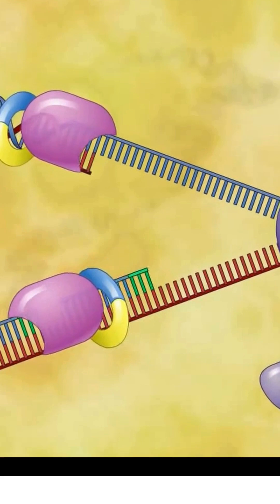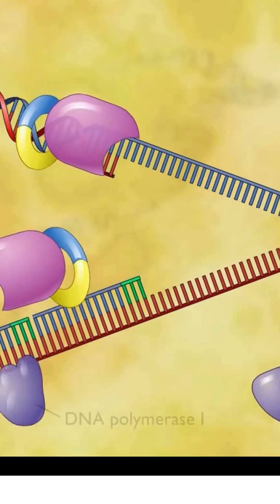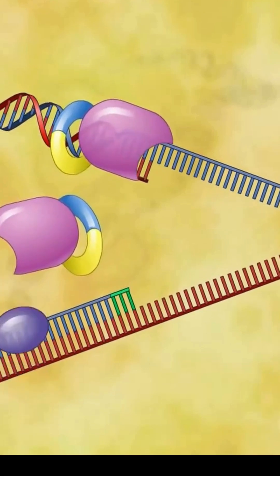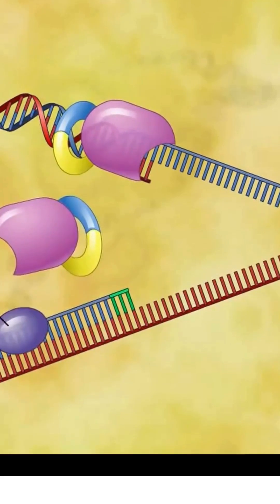it is replaced by DNA polymerase 1, which removes the RNA and replaces it with DNA. DNA ligase then attaches and forms phosphodiester bonds.